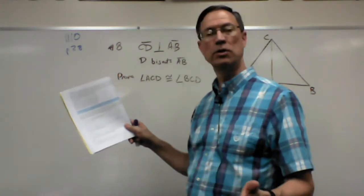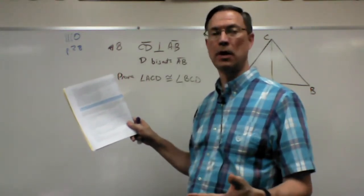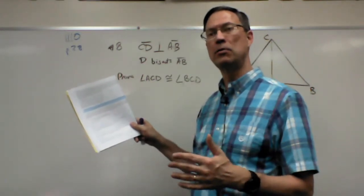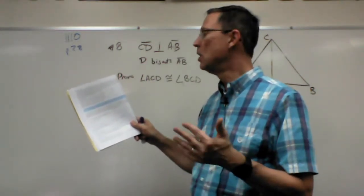The other two sides are just called the legs of the triangle. So the longest side is the hypotenuse. The other two, doesn't matter which is which, are the legs.